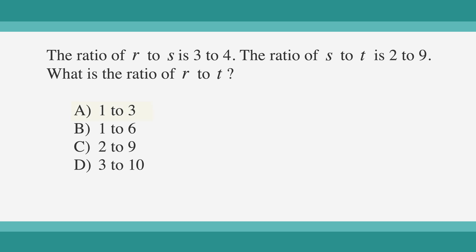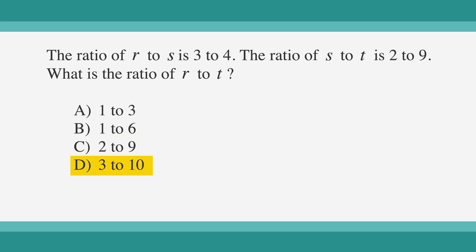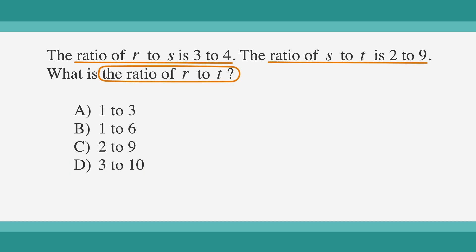The answer choices are: A) 1 to 3, B) 1 to 6, C) 2 to 9, and D) 3 to 10. Let's underline the facts, circle the key words, and label the answer choices. We're looking for the ratio of r to t. We have numbers in the answer choices rather than variables, but we can still pick numbers for this problem.